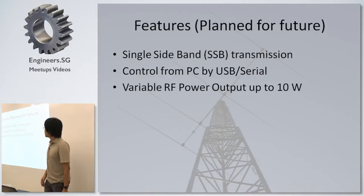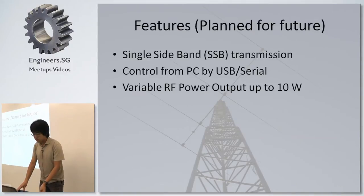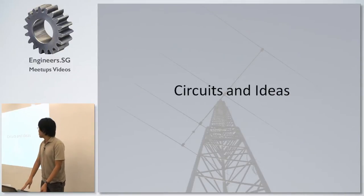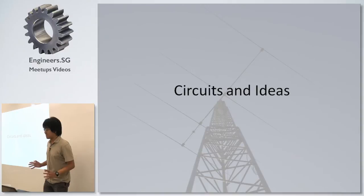These are the planned features for the future, which are single sideband transmission, which is a form of amplitude modulation, controlled by serial port, and basically variable RF power output. So I'm going to talk about the circuits and ideas I used that are used in this demo that I have here. This is just a transmit demonstration, and I don't have a receiver here, so later after this we'll have to use a frequency counter to show that there is output.